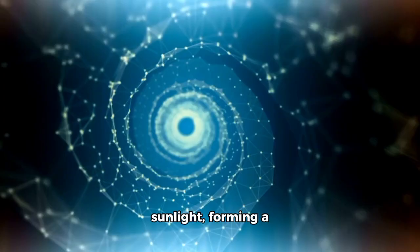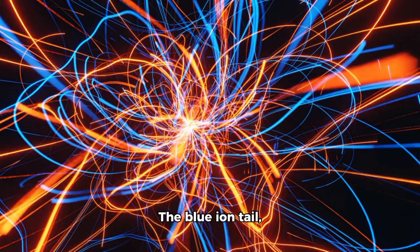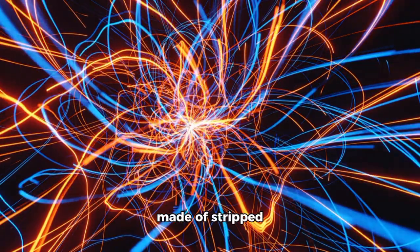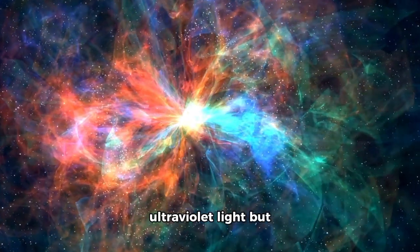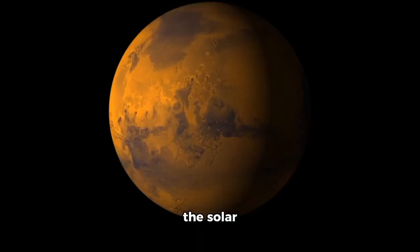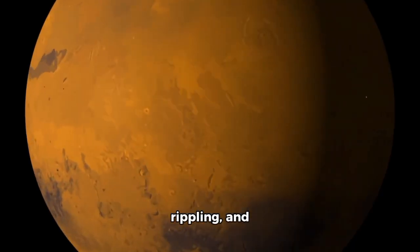The blue ion tail, made of stripped molecules like CO and CN, glowed under ultraviolet light but was at the mercy of the solar wind: snapping, rippling, and sometimes breaking entirely.